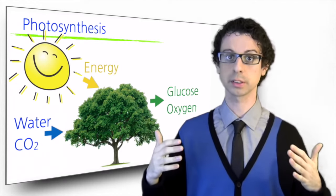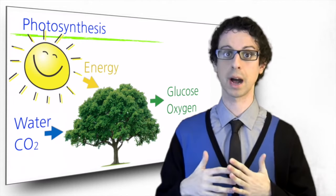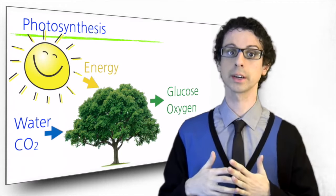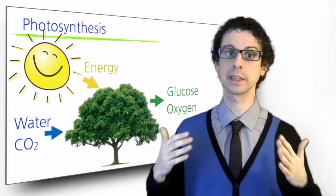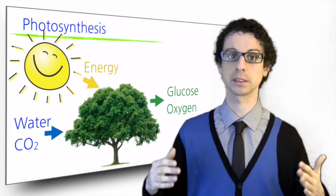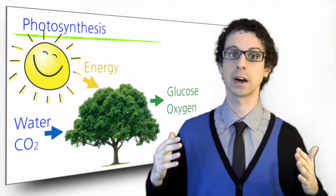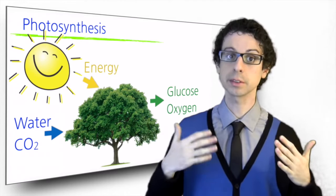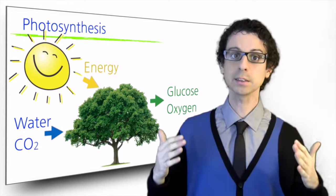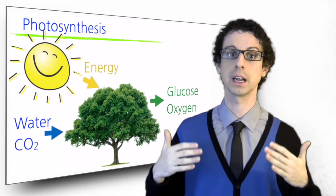Glucose can also be further processed to other more complex carbohydrates such as starch for longer term energy storage or even transformed to other nutrients such as lipids, amino acids or vitamins, sometimes incorporating minerals that are found in the soil. So by eating plants or animals who previously ate plants, we can get these molecules and use them to sustain our own life.